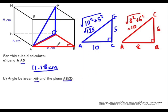Now we're going to work out the angle between AG and ABCD. Again we'll use it as a 2D drawing for a triangle we've already drawn.